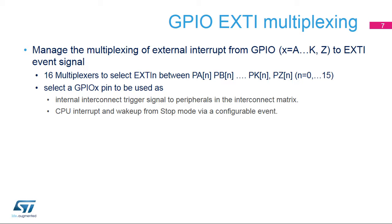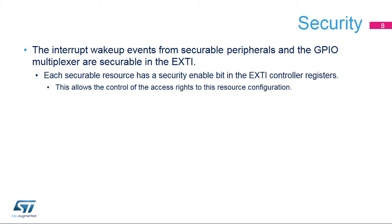The GPIOs are connected via multiplexers to the 16 eXTI events as configurable events, to trigger other peripherals through the interconnect matrix, or IMX. GPIOs can also be used as configurable interrupts to generate asynchronous external interrupts or events with wake-up from stop-mode capability. It also allows the selected GPIO pin to be used as an internal interconnect trigger signal to the peripherals.